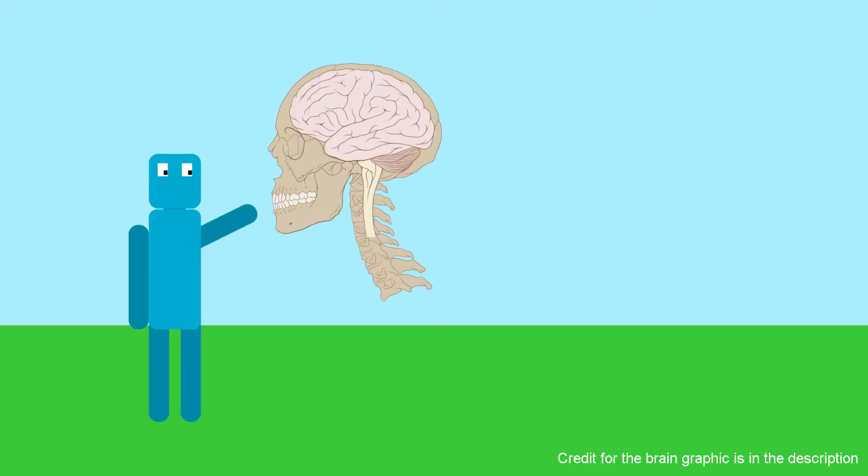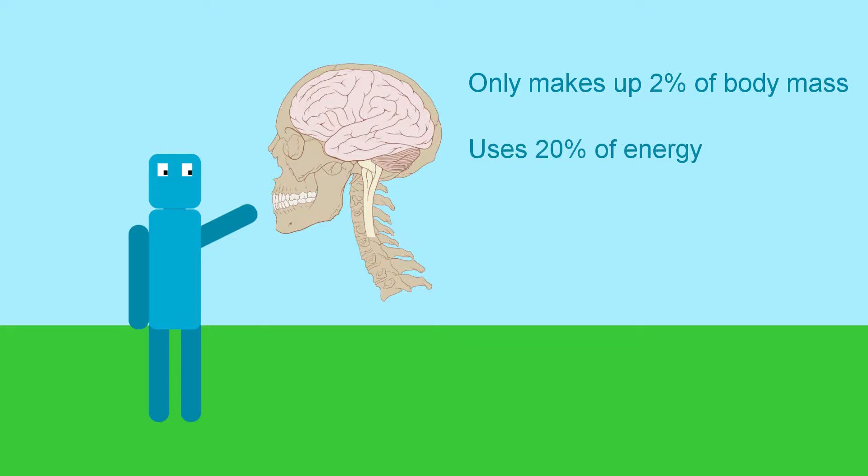Our brain only makes up about 2% of the mass of our bodies. However, it uses up about 20% of the energy we consume, and this means that with each heartbeat, about 20% of the blood that we pump goes to the brain.